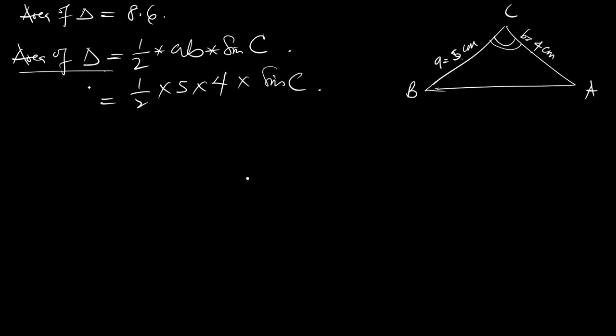We know that the area is 8.6 cm². So we have 8.6 cm². This gives us 2 divided by 2 is 1, 2 divided by 4 is 2. So we have 10 sine C equals 8.6 cm². The cm² will cancel each other.